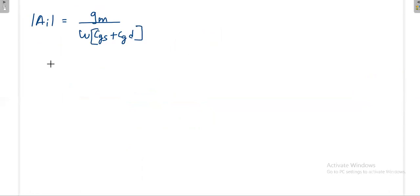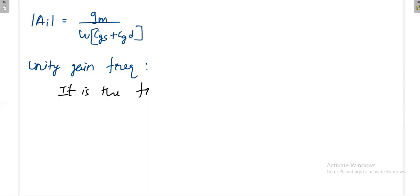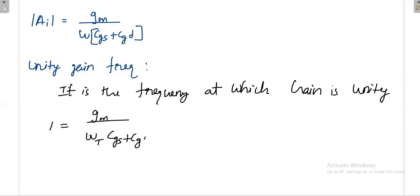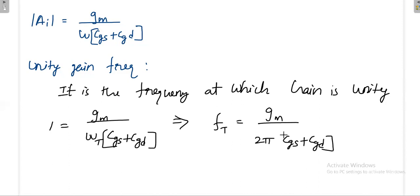The unity gain frequency is the frequency at which the current gain magnitude equals unity. Setting |Ai| = 1, we get ωT = GM / (CGS + CGD). Converting to cyclic frequency: fT = GM / [2π(CGS + CGD)]. This is the unity gain frequency for the high frequency MOSFET model.